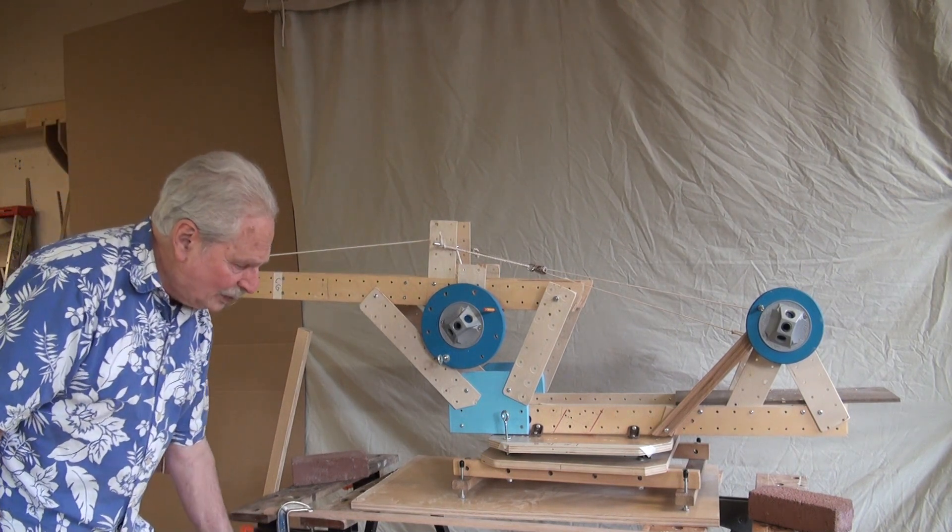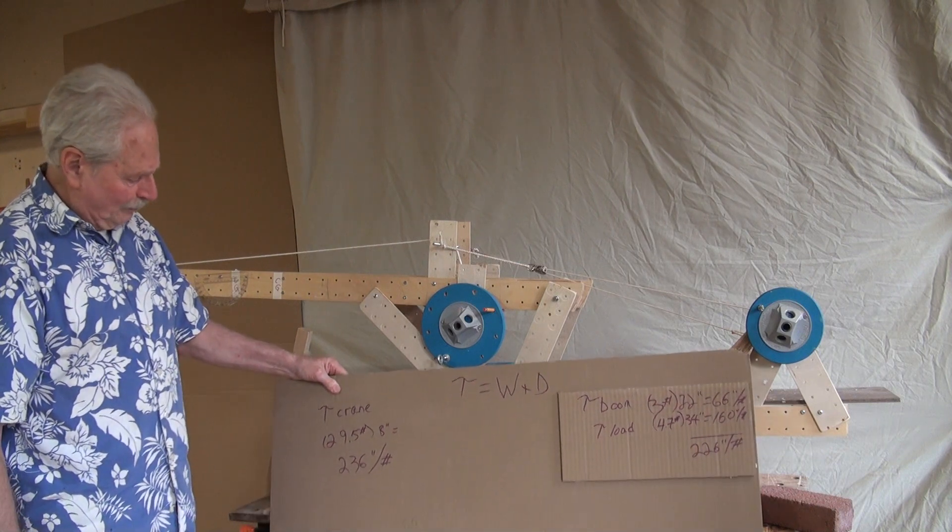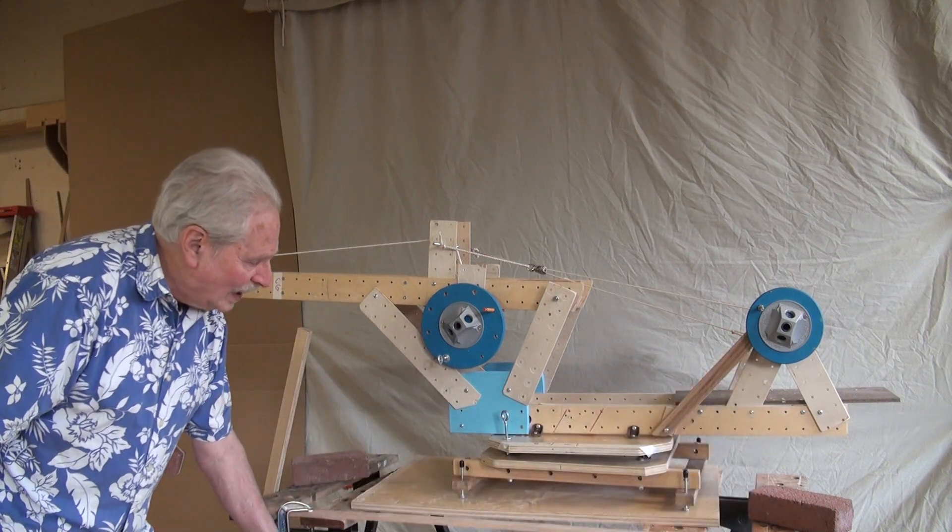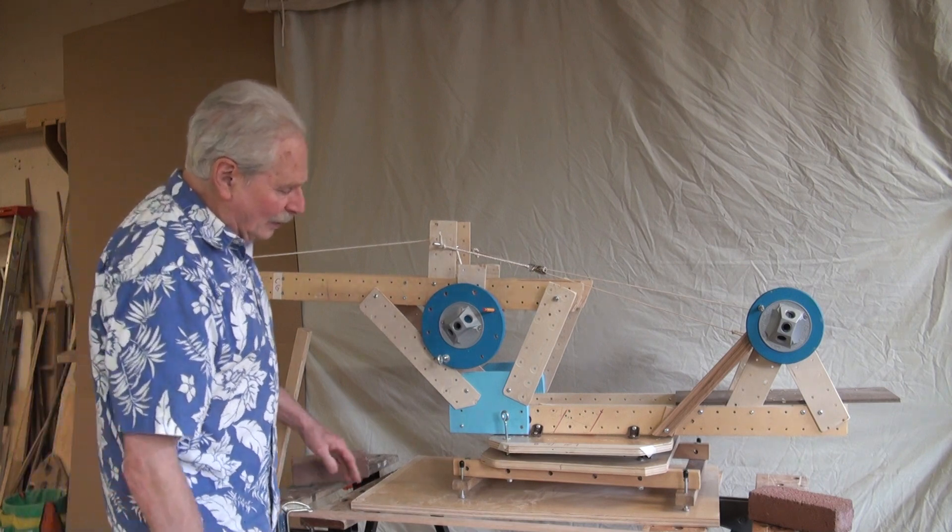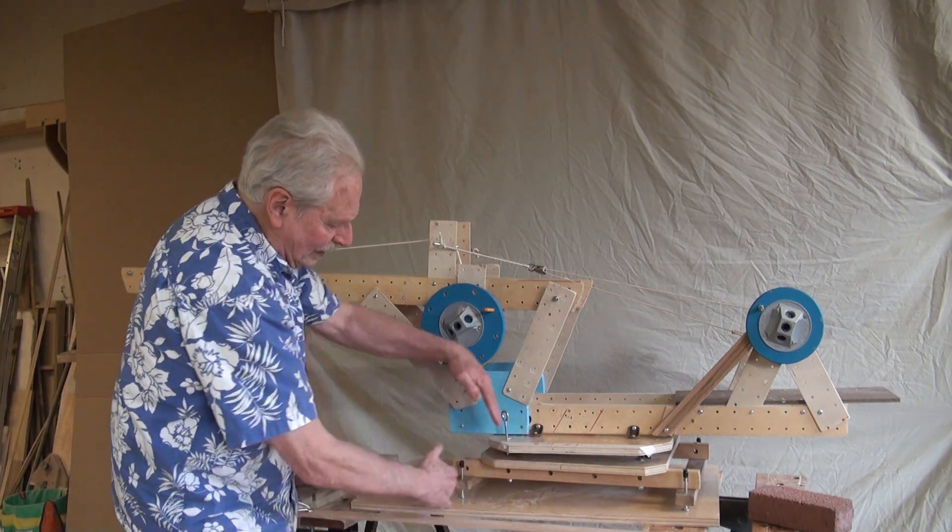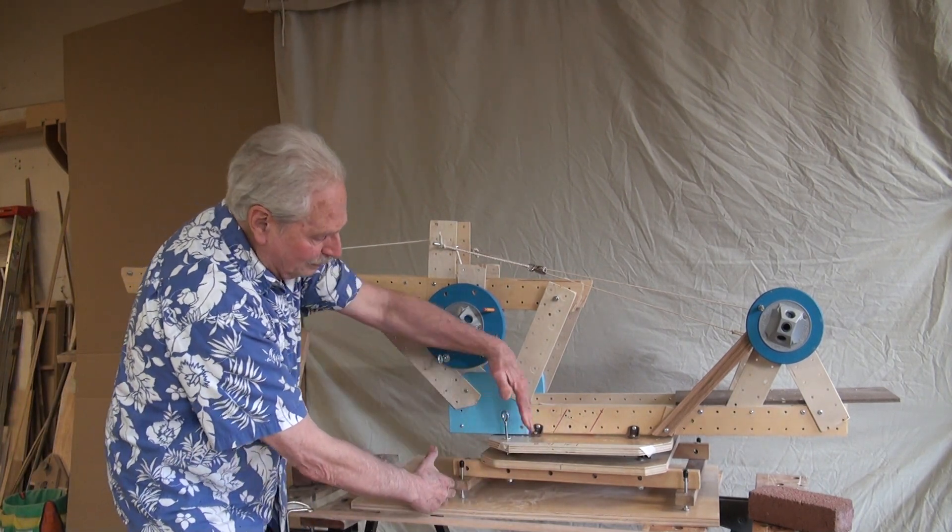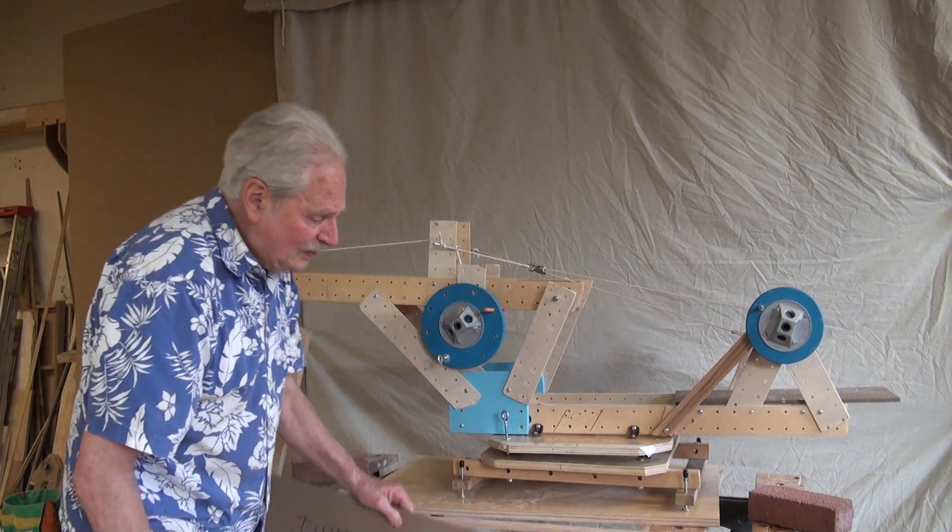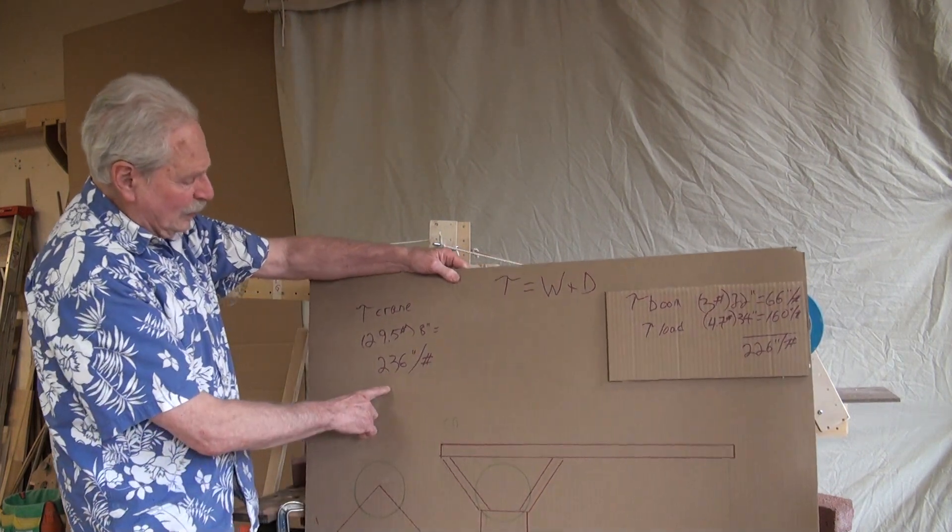So remember torque is weight times distance. So the crane weighs 29 and a half pounds and the center of gravity is here eight inches from the pivot point. Weight times distance, you get 236 inch pounds.